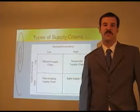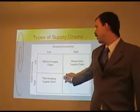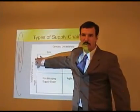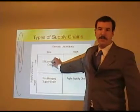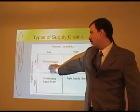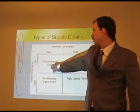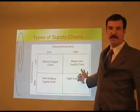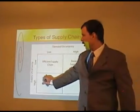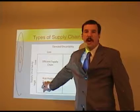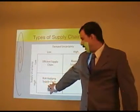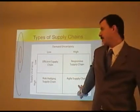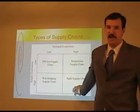There are different types of supply chains. Here's a graph showing the different kinds, with demand uncertainty on one axis and supply uncertainty on the other. If you have low demand uncertainty and low supply uncertainty, you have an efficient supply chain. High demand uncertainty but low supply uncertainty gives you a responsive supply chain. High supply uncertainty with low demand uncertainty gives you a risk-hedging supply chain. And if you have both high demand uncertainty and high supply uncertainty, you have an agile supply chain.